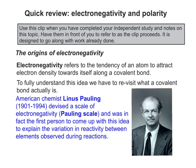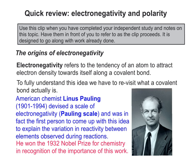American chemist Linus Pauling was the first person to come up with this idea. He came up with a scale to try to explain the variation in reactivity between elements. At the time, it was such a groundbreaking piece of work that he won the 1932 Nobel Prize for applying it to the reactivity that people had already observed in the way different elements behaved in the lab.